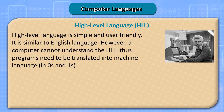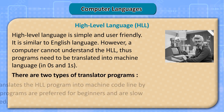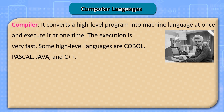High-Level Language (HLL). High-level language is simple and user-friendly, and is similar to the English language. However, a computer cannot understand HLL directly, so programs need to be translated into machine language in 0s and 1s. There are two types of translator programs: an Interpreter, which translates the HLL program into machine code line-by-line and is preferred for beginners but is slow in execution; and a Compiler, which converts a high-level program into machine language all at once and executes it quickly. Some high-level languages are COBOL, Pascal, Java, and C++.